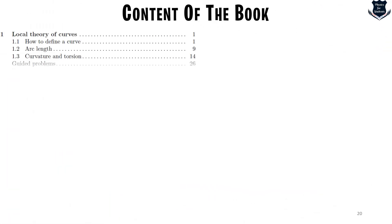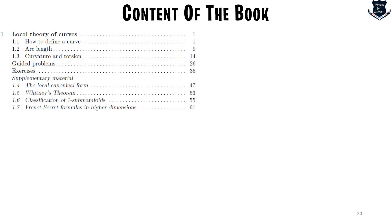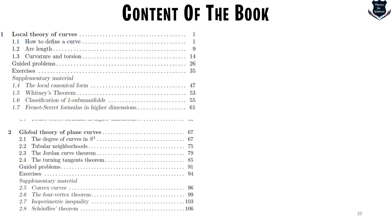Right now we will move to the content of the book and first I would like to show you the table of contents. First it starts with local theory of curves. One is the local theory of curves so first it starts with how to define a curve, arc length, curvature and torsion and there are problems and supplementary material then it moves from local to global very sequentially as you understand tubular neighborhoods, Jordan curve theorem, turning tangents theorem and again exercises.